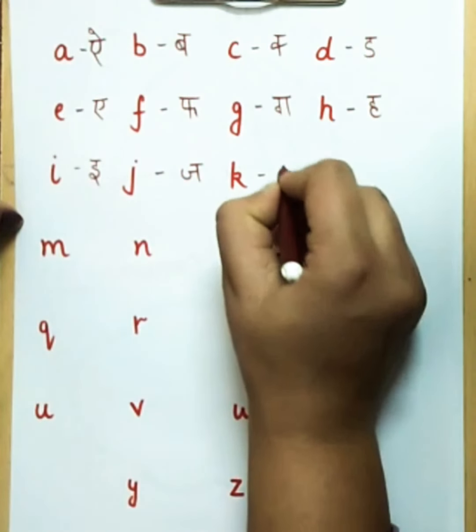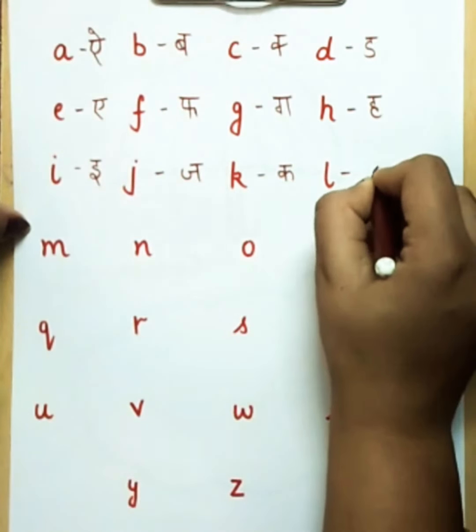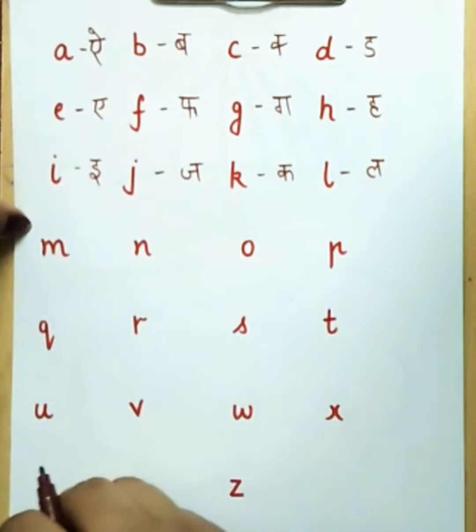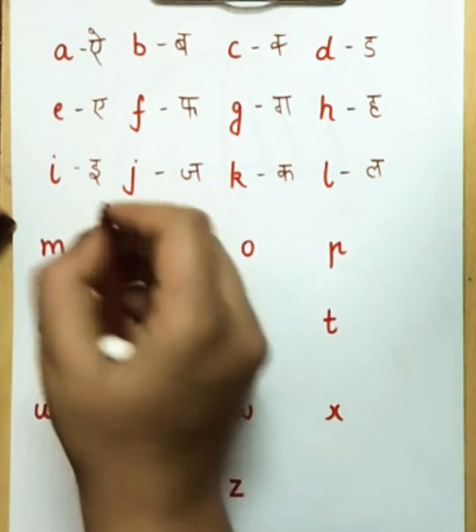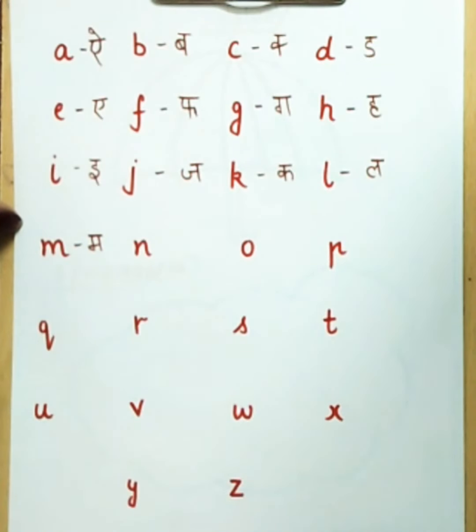K says K. K says K as kite. L says L. L says L as lamp. M says M. M says M as mango.